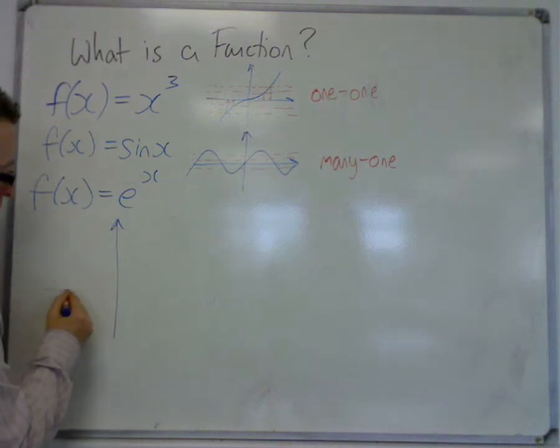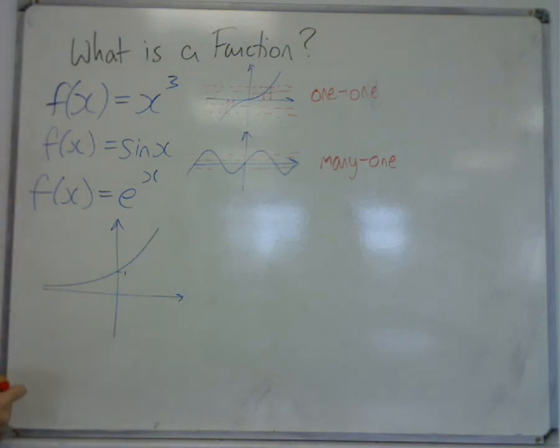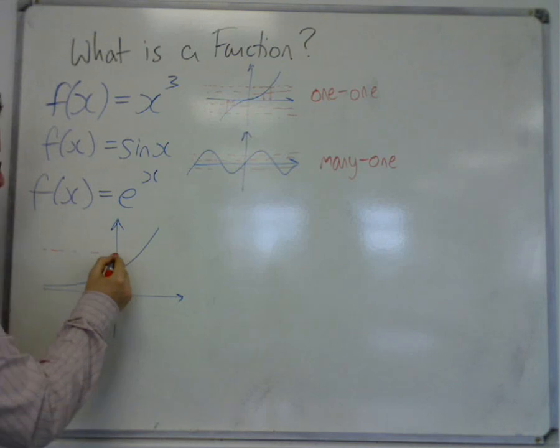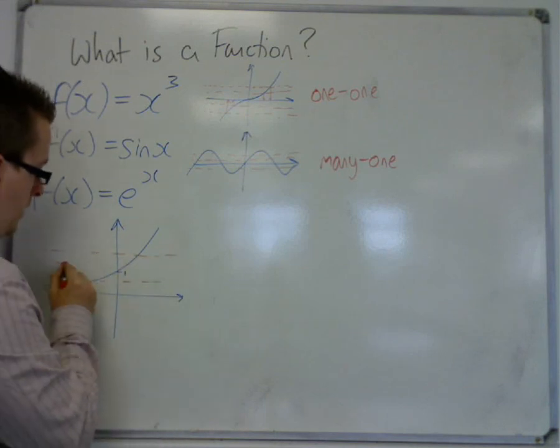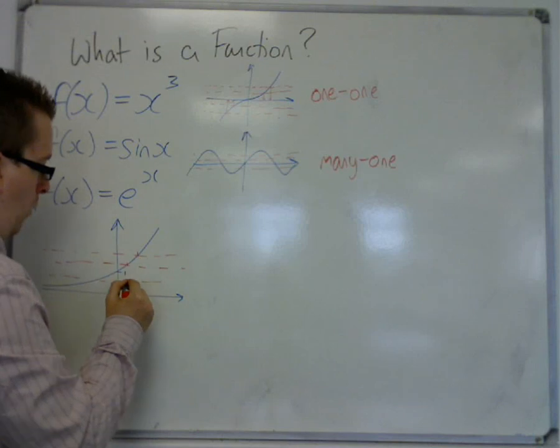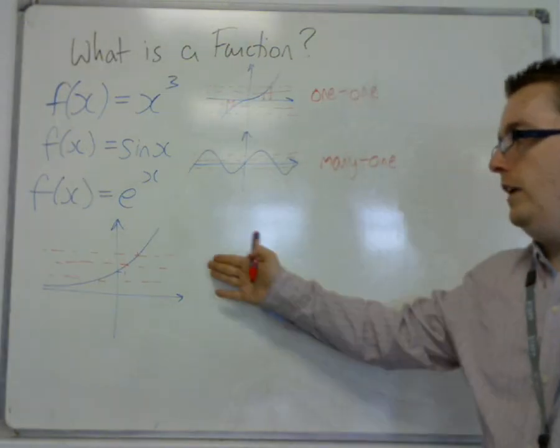Well, if you remember what the curve looks like, here's the curve of e to the x. So that any horizontal line that I push across the graph, I'll only get one value of x. So this is one to one.